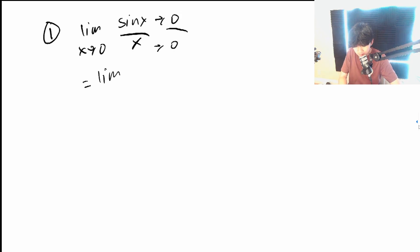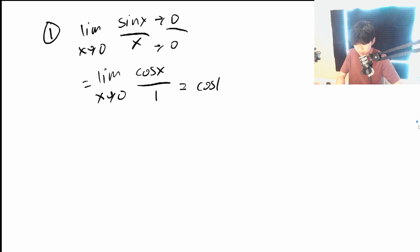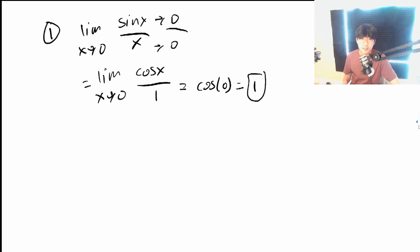So we can now use L'Hôpital's rule and take the derivative of each of the numerator and the denominator. This is the limit as x goes to 0 of the derivative of sin(x), which is cos(x), divided by the derivative of x, which is just 1. And this is just cos(0) by direct substitution, which of course is just 1.